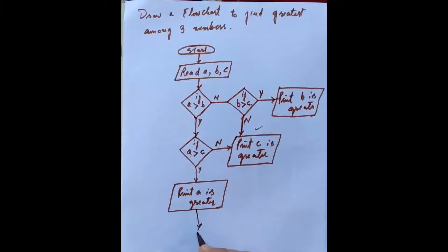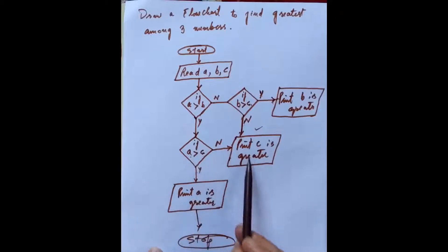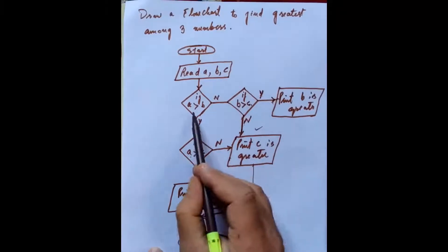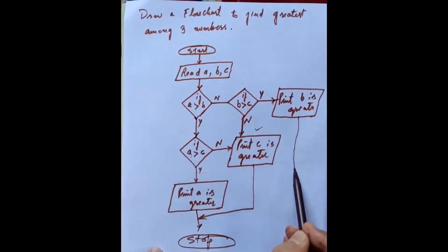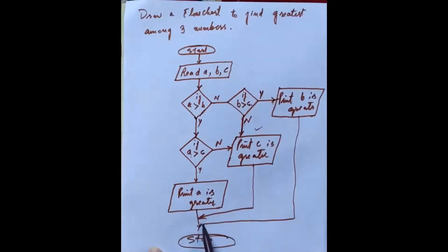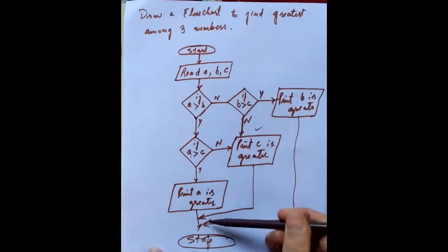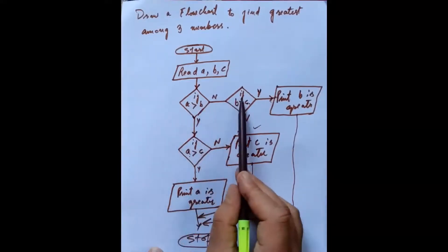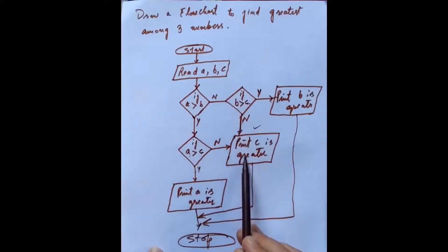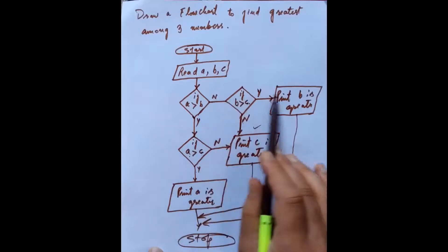If it was on this track, it will get stopped here. If it was on this track, it will also get stopped. These are different tracks. This is the first track, this is the second track, and this is the third track.